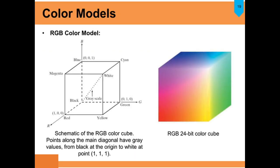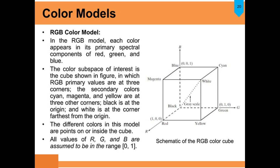In the RGB model, it is a 24-bit color cube. On the three coordinate axes are R, G, and B. The mixing of two coordinates produces cyan, magenta, and yellow at other corners of the cube. On the center axis, the black color is at the origin and white is at the corner farthest from the origin. The main diagonal has gray values. The different colors in this model are the points on or inside the cube.